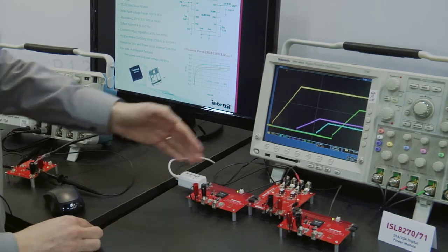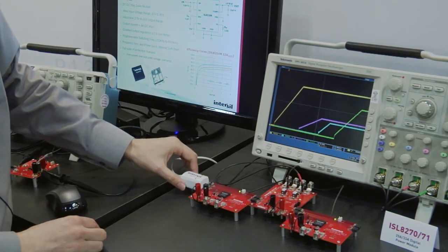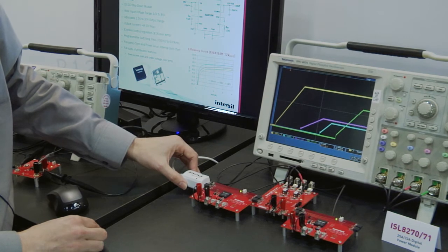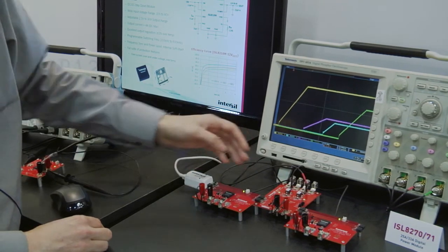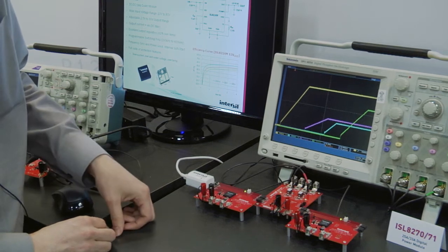You'll notice all the boards are connected and we just push them together and they're connected to the Intersil dongle that converts a USB to PMBUS signal that allows us to control all the devices through the PowerNavigator GUI.